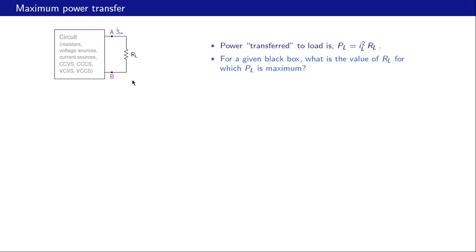Let us now talk about maximum power transfer, which is a very useful concept in electronic circuits. Here is a linear circuit consisting of resistors, independent DC voltage sources, independent DC current sources, and dependent sources such as current-controlled voltage sources, current-controlled current sources, etc. To this circuit we connect a load resistance RL, which will draw a current IL and absorb power given by PL equal to IL squared times RL.